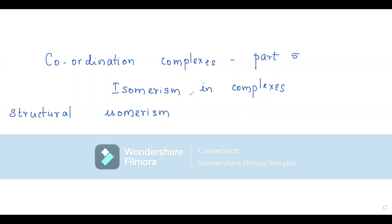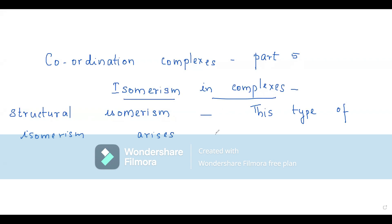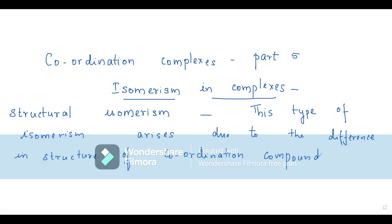Welcome back to Tales of Chemistry. In this episode, we are discussing isomerism in complexes, precisely structural isomerism. Structural isomerism arises due to the difference in the structure of a coordination compound — same molecular formula, but different structure. That is what we call structural isomerism.